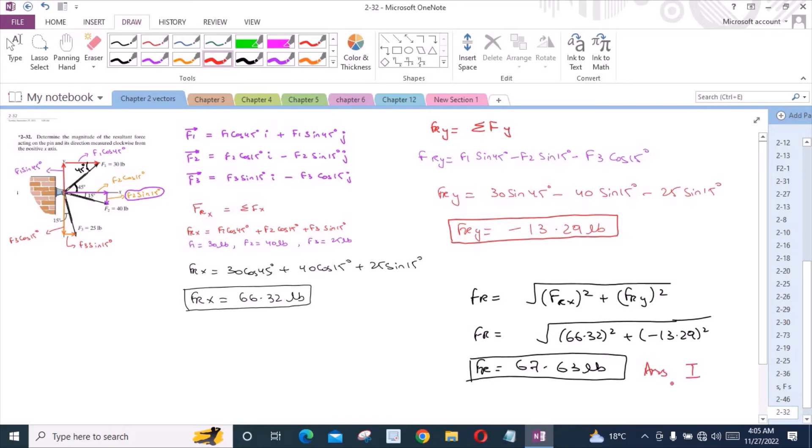Now we have to find the angle measured clockwise from the positive x-axis made by the force Fr. If I draw two perpendicular axes right here,